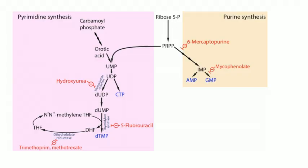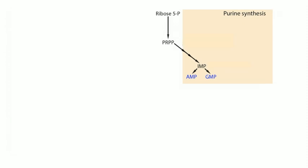For purine synthesis, you start with the sugar and add the base — opposite of pyrimidine synthesis. Purine synthesis starts by converting ribose-5-phosphate to PRPP. The rate-limiting step is catalyzed by glutamine PRPP amidotransferase. The cancer drug 6-mercaptopurine (6-MP) inhibits PRPP amidotransferase, thereby inhibiting purine synthesis.